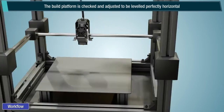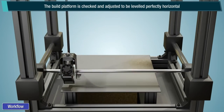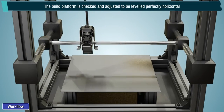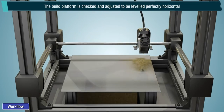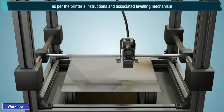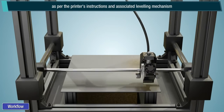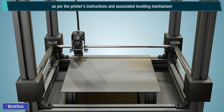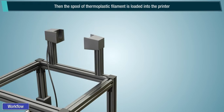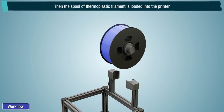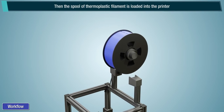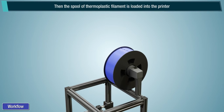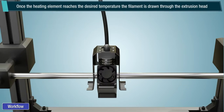The build platform is checked and adjusted to be leveled perfectly horizontally as per the printer's instructions. Then the spool of thermoplastic filament is loaded into the printer. Once the heating element reaches the desired temperature, printing begins.